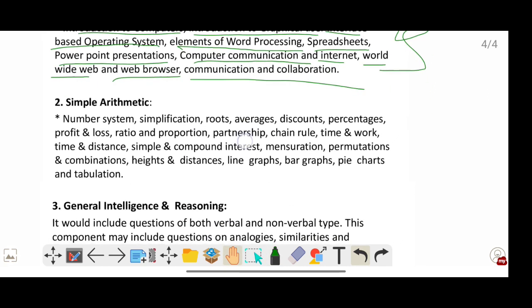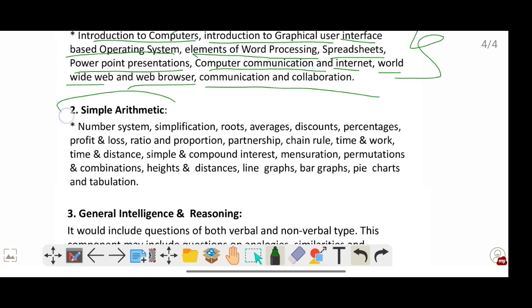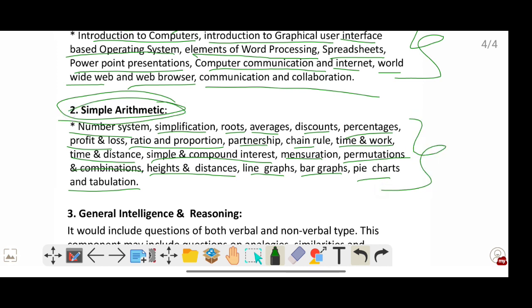The second topic for Paper 2, that is Simple Arithmetic. The topics under Simple Arithmetic are number system, simplification, roots, averages, discounts, percentage, profit and loss, ratio and proportion, partnership, chain rule, time and work, time and distance, simple and compound interest, mensuration, permutations and combinations, heights and distances, line graphs, bar graphs, pie charts, and tabulation.